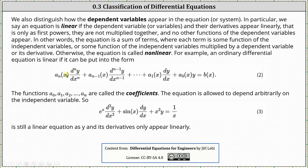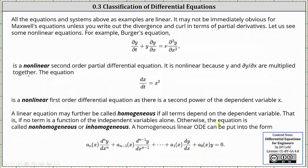You may want to pause the video and study this form. The functions a sub zero through a sub n are called the coefficients, and the equation is allowed to depend arbitrarily on the independent variable. So the differential equation shown below is still a linear equation as y and its derivatives only appear linearly, meaning raised to the first power. All the equations and systems above as examples are linear.